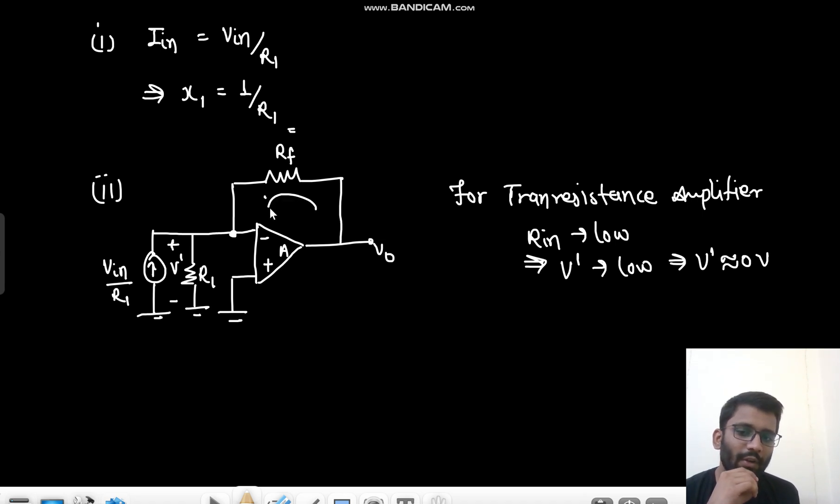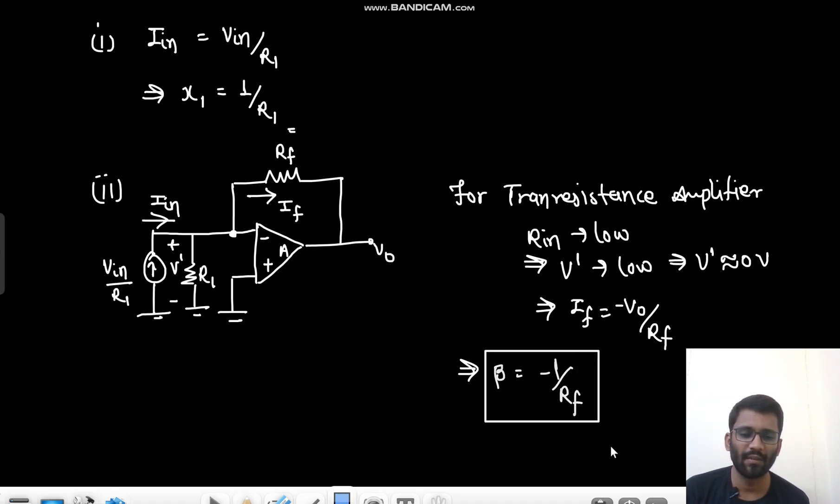So if this goes nearly to zero volt, what will be the feedback current? I feedback. If this goes to nearly zero volt, that means your I feedback would be V0 by RF. But sorry, the direction of I feedback will be like this, because this is the input current. This is the input current I in. So this should be the feedback current. It should be the feedback current. So I feedback would be minus V0 by RF. So from here, what do you see? Your beta is minus one by RF.